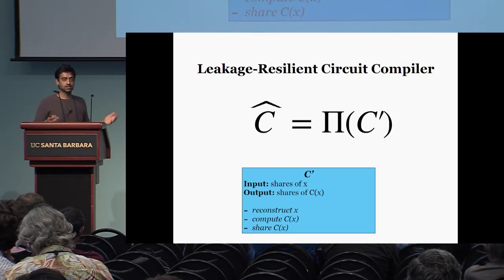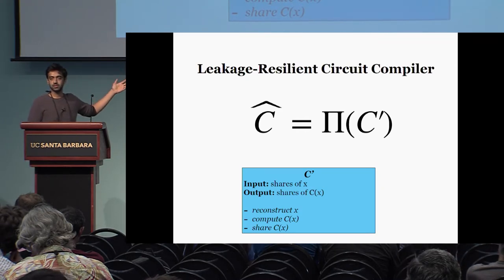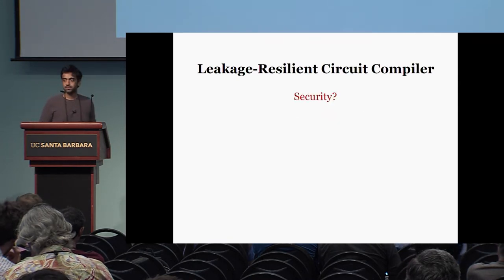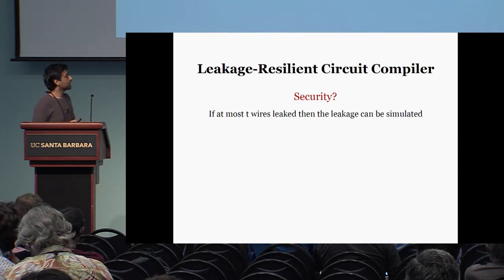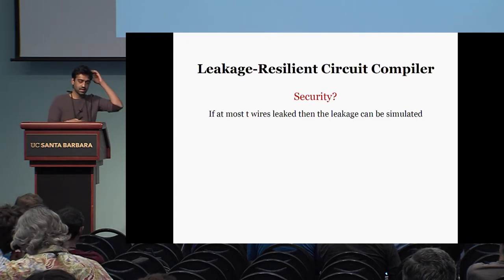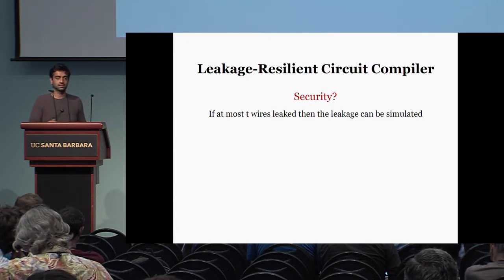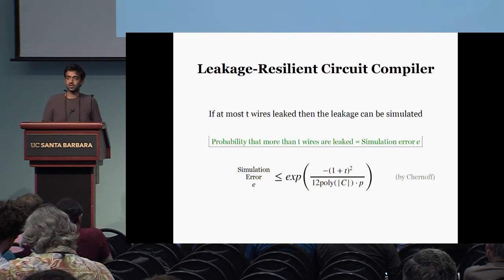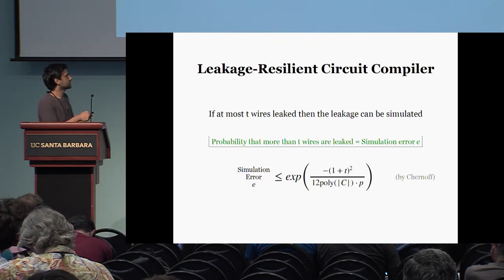The encoding and decoding are trivial algorithms: the encoding just secret shares the input and the decoding reconstructs the output. Why is this secure? If at most T wires are leaked in the circuit, then the leakage can be simulated, because any T wires being leaked is the same as any T parties being corrupted in the corresponding MPC protocol, and the MPC protocol guarantees that as long as at most T parties are corrupted, things are secure.